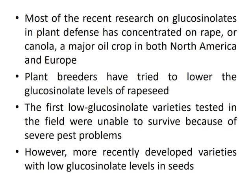Most recent research on glucosinolates in plant defense has concentrated on rape or canola, a major oil crop in both North America and Europe. Plant breeders have tried to lower glucosinolate levels of rapeseed so that the high-protein seed meal remaining after oil extraction can be used as animal feed. The first low-glucosinolate varieties tested in the field were unable to survive due to severe pest problems. However, more recently developed varieties with low glucosinolate levels in seeds but high levels in leaves are able to resist pests and still provide protein-rich seed residues for animal feeding.